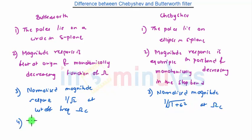In Butterworth filter, only few parameters are needed to be calculated. But in Chebyshev filter, a large number of parameters are needed to be calculated.